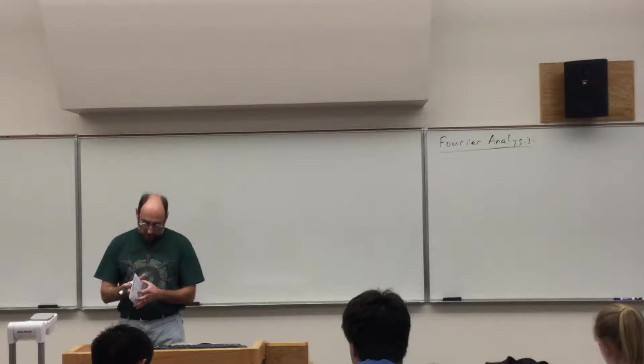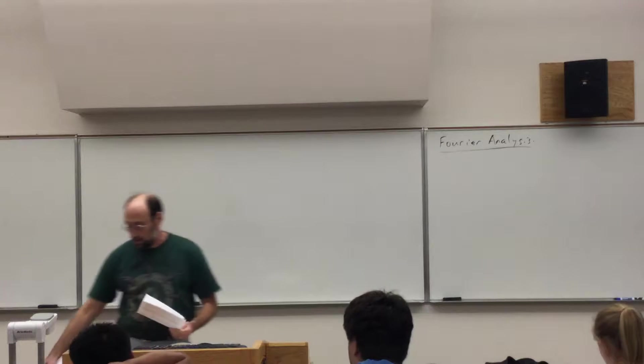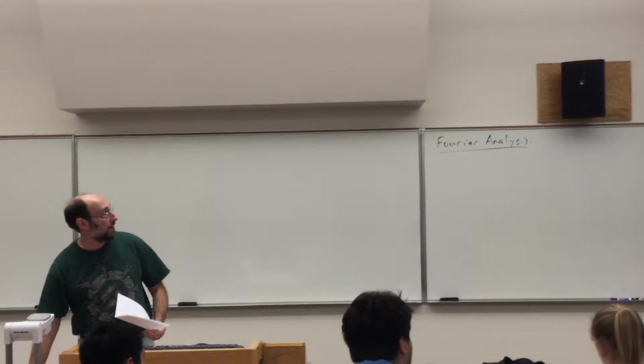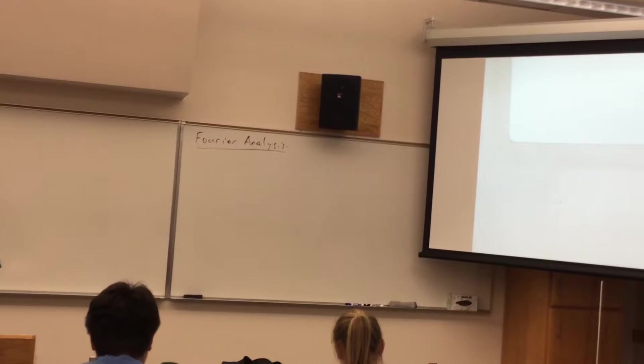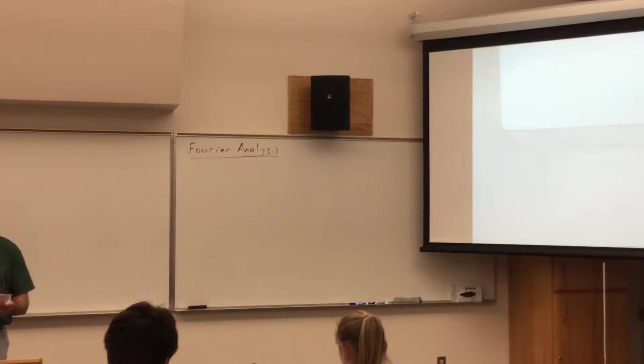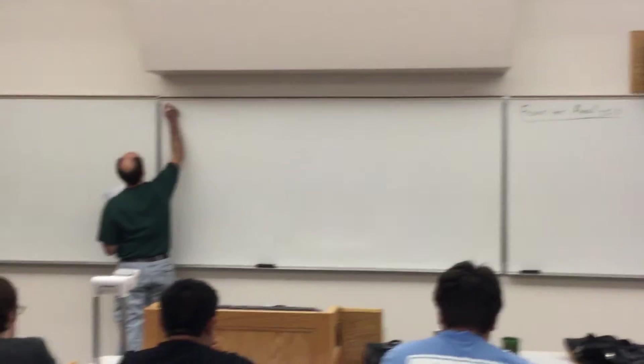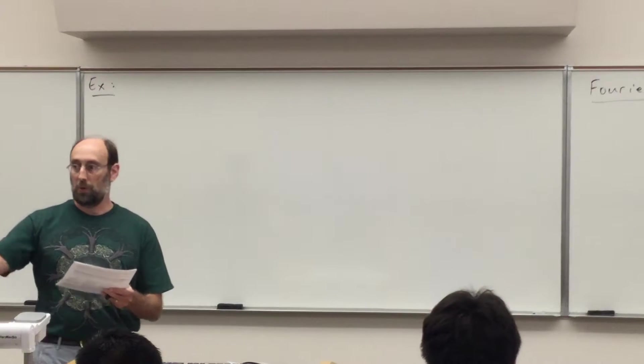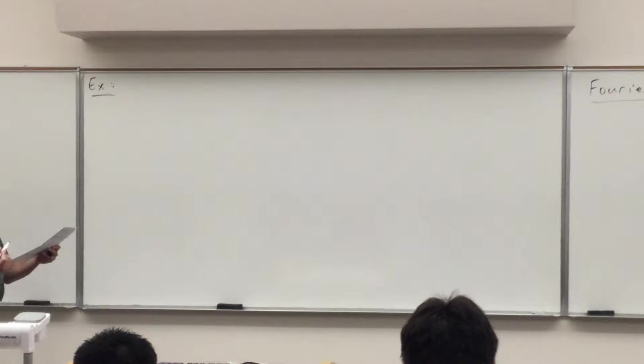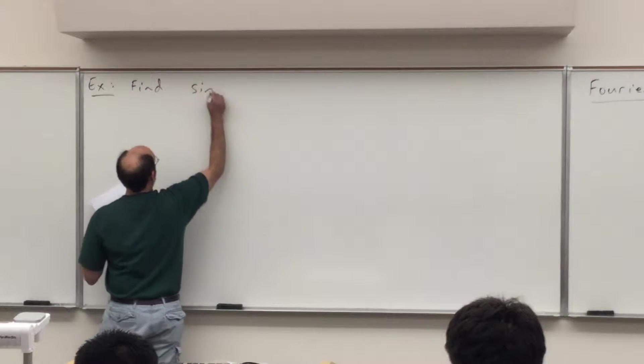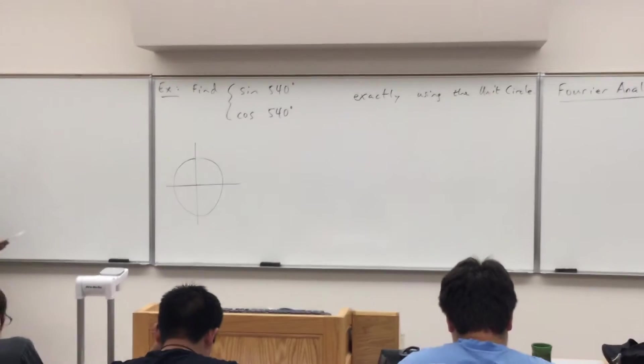We covered the trig functions of the quadrantal angles. There's a table in your textbook, and I made a table in class of how to find the trig functions of the quadrantal angles. Let's do an example to recap. We might represent the angle in standard position and then use points on the unit circle to find the trig functions. I want to find sine of 540 degrees and cosine of 540 degrees exactly using the unit circle.